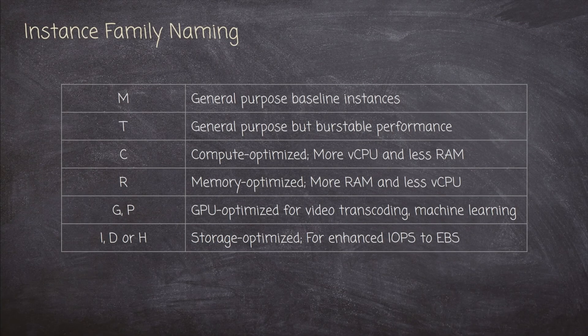Those 700 different VM types just have different arrangements of various components of RAM and vCPU. Some have GPU capabilities; some are more optimized for compute workloads, some for network throughput or storage. And nowadays we even have physical systems that are not really VMs at all. All instances have names, and depending on what the name starts with tells us what AWS thinks the specialty or optimization of that machine is. If an instance type starts with M, that's a general purpose baseline instance — good for pretty much anything.